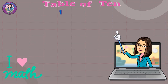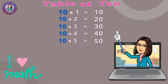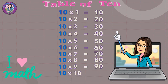Table of 10. 10 x 1 equals 10. 10 x 2 equals 20. 10 x 3 equals 30. 10 x 4 equals 40. 10 x 5 equals 50. 10 x 6 equals 60. 10 x 7 equals 70. 10 x 8 equals 80. 10 x 9 equals 90. 10 x 10 equals 100.